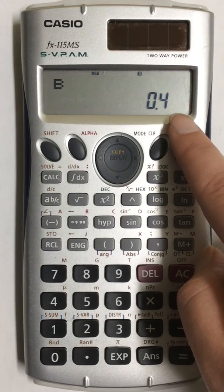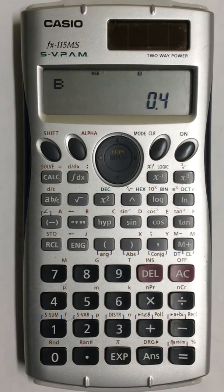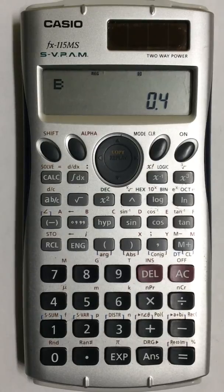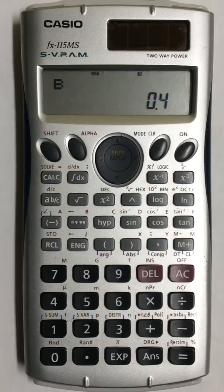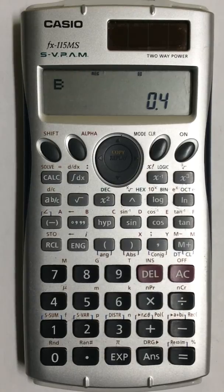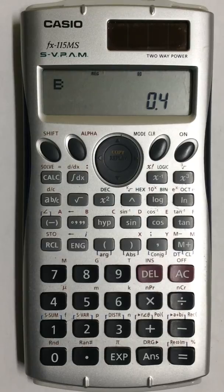And so those are your two variables for your regression line both your slope and Y intercept and that's how to find them in your Casio FX 115 MS scientific calculator.